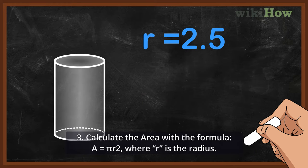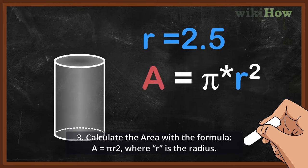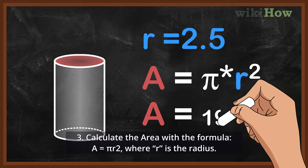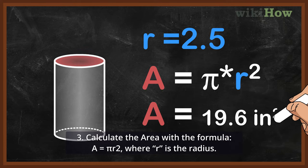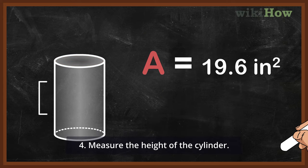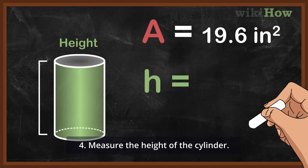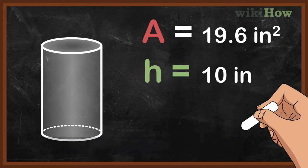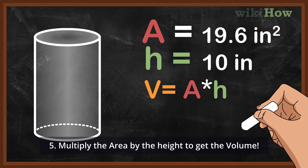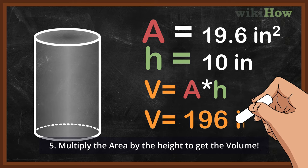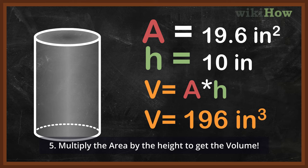3. Calculate the area with the formula A equals pi r squared, where r is the radius. 4. Measure the height of the cylinder. 5. Multiply the area by the height to get the volume.